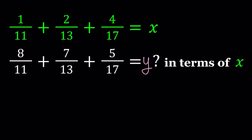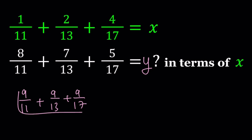What happens if we just add x and y? We get 9/11 + 9/13 + 9/17 — and by the way, it's not that we get 9/11 + 9/13 + 9/17 in some other way. It kind of looks good because we all have 9s in the numerator, but it's not very helpful because these are not integers.